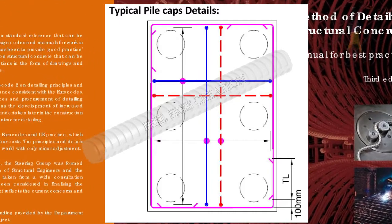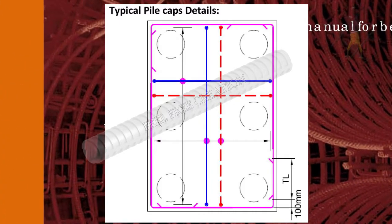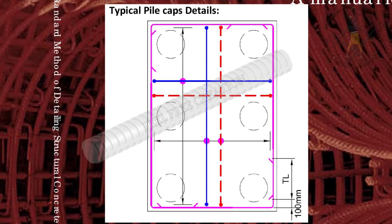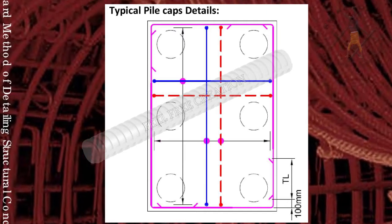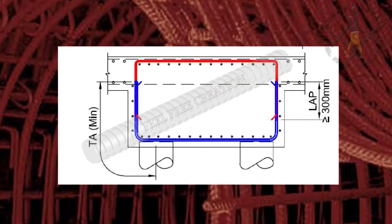Pile cap bar arrangement. Typical bar arrangement is shown here, where TL is tension lap and TA is tension anchorage. Avoid bottom lap at top pile cap to avoid congestion.